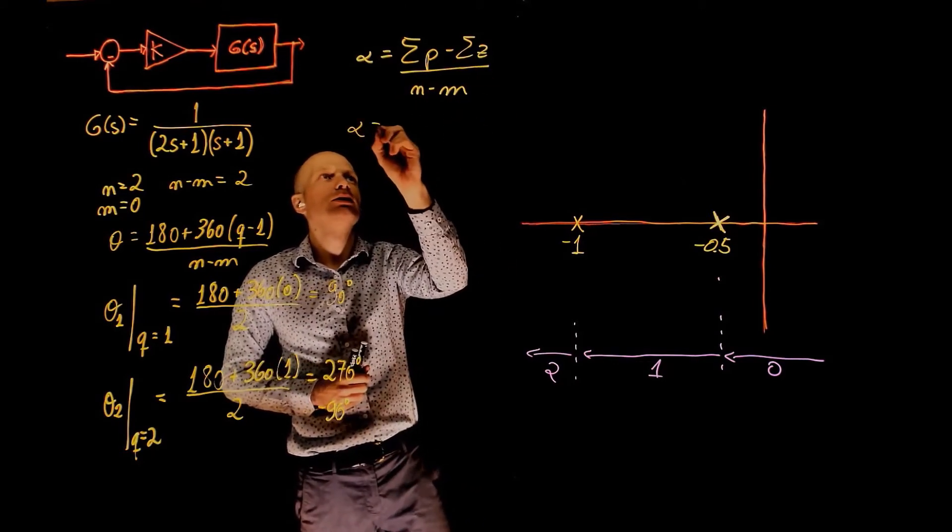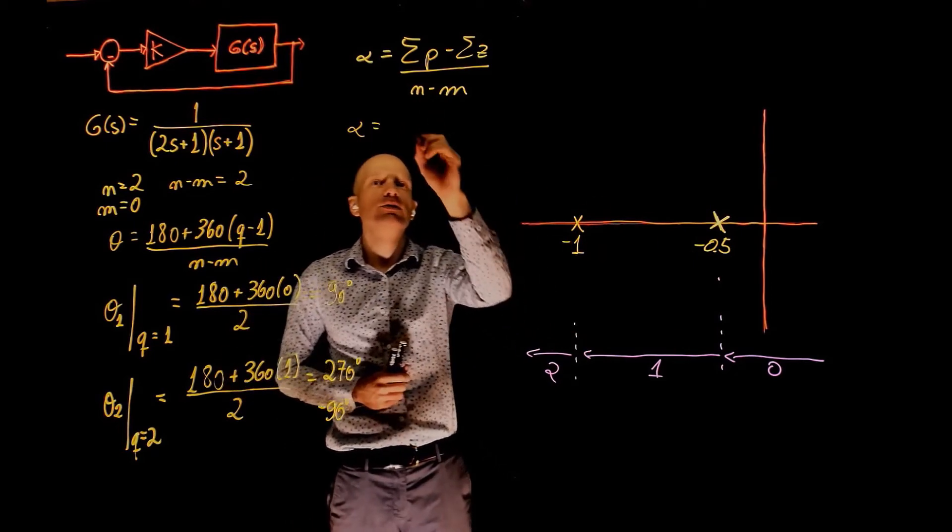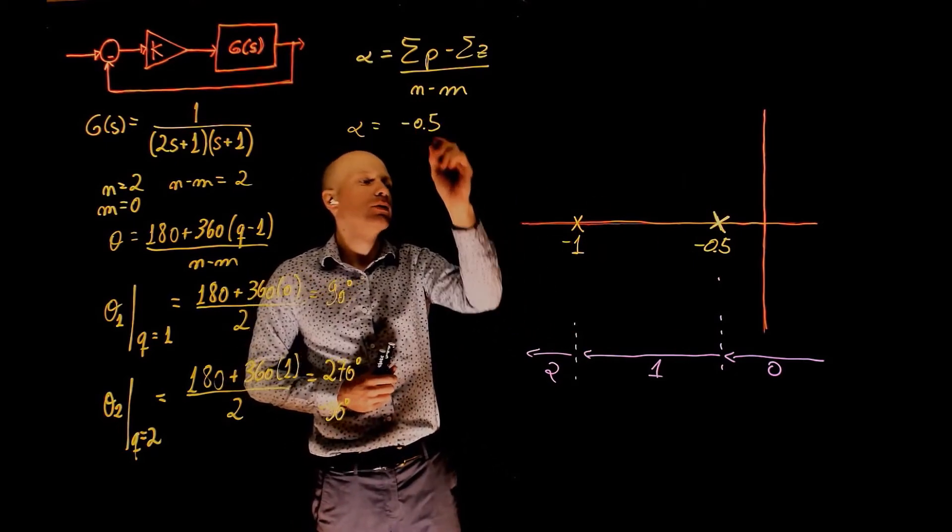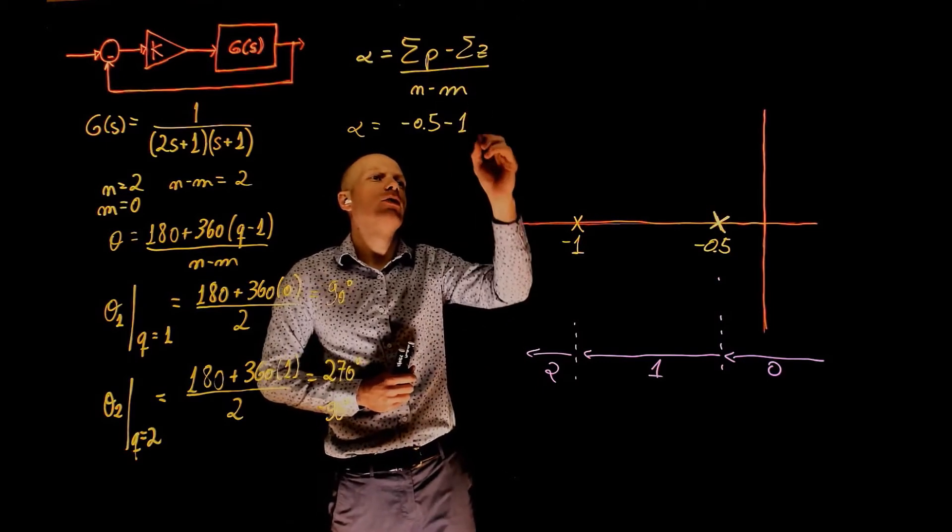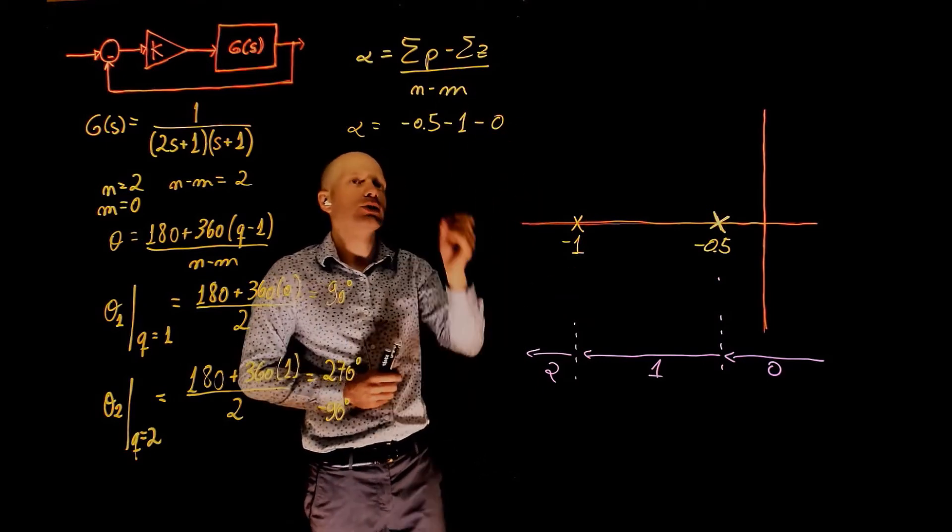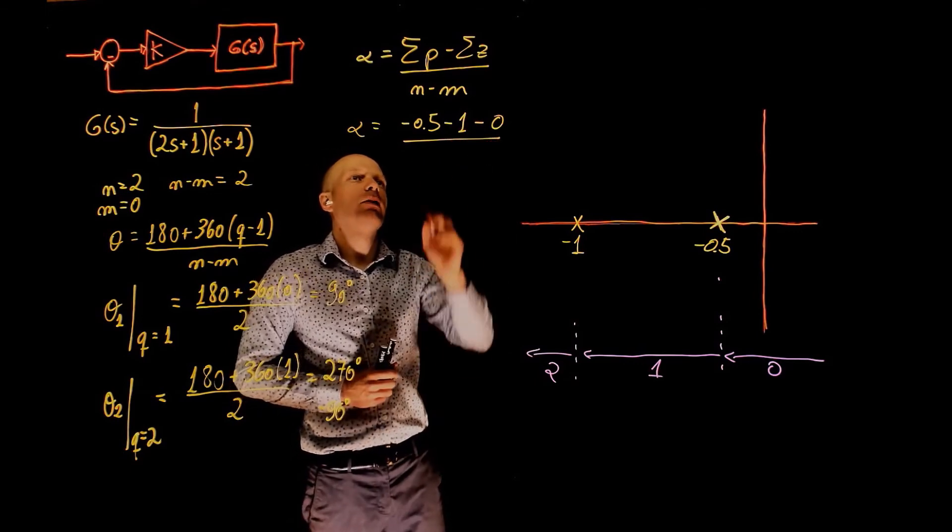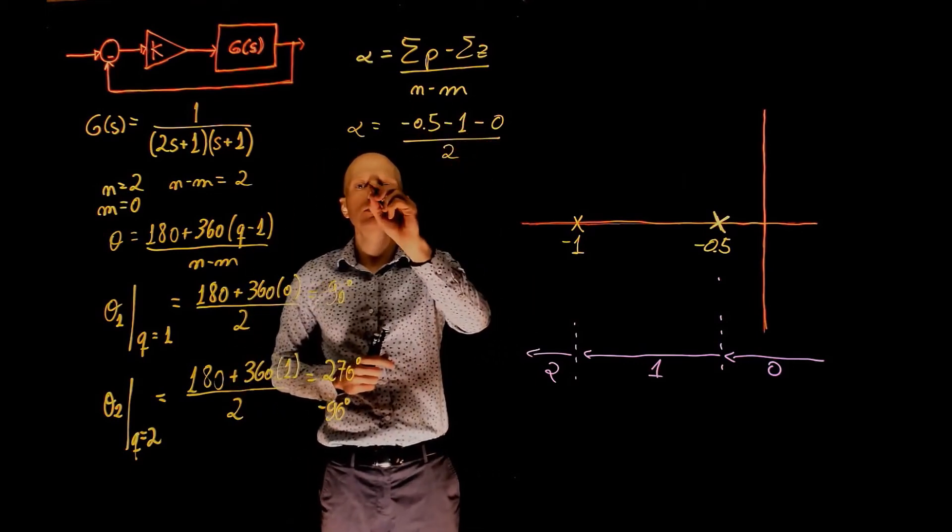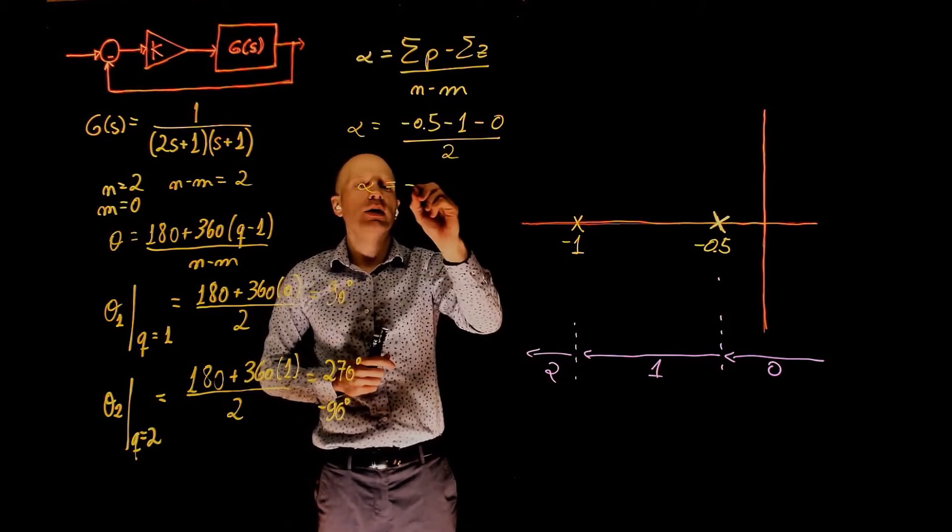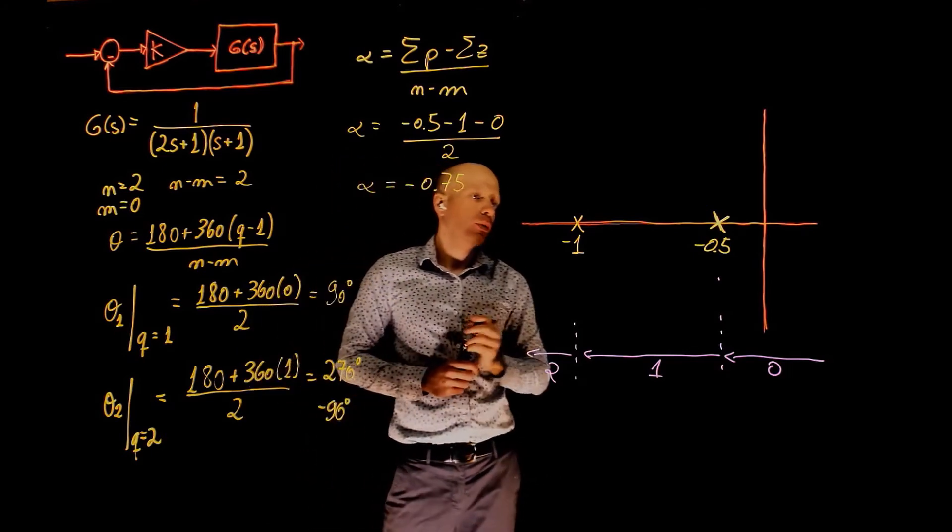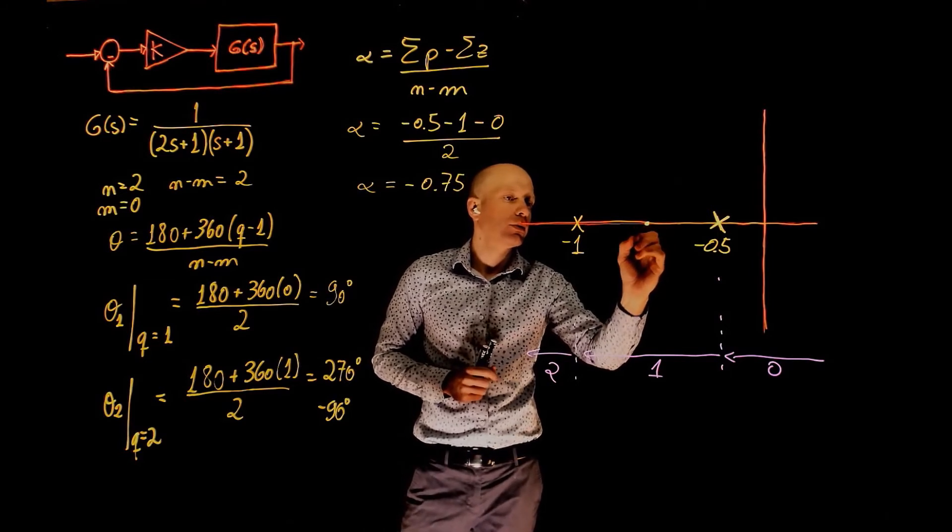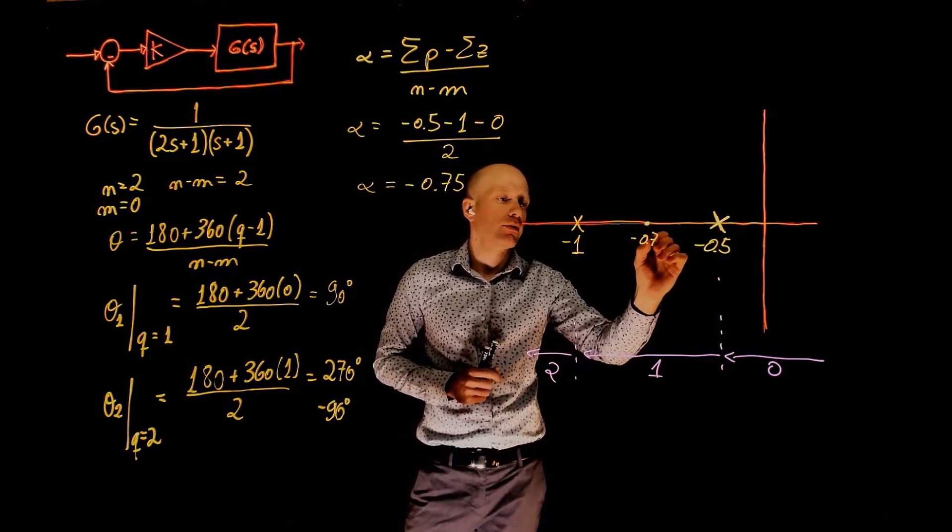Alpha is sum of poles, we have negative 0.5 plus negative 1, so negative 1.5, minus the sum of all zeros, there is no zero, so you can just write zero, divided by n minus m, that is 2. Alpha is negative 0.75, which is right in the middle here, negative 0.75.